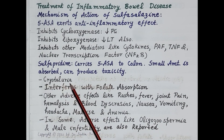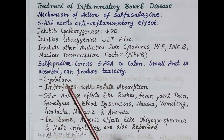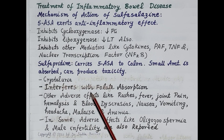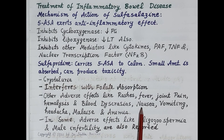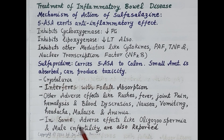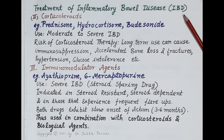Metabolites of sulfasalazine form crystals passed in the urine, so one side effect is crystalluria, which can cause kidney damage. Sulfasalazine also interferes with folate absorption, so folic acid supplementation should be given alongside this drug. Other side effects include rashes, fever, joint pain, hemolysis, blood dyscrasias, nausea, vomiting, headache, malaise, and anemia. In some patients, adverse effects like oligozoospermia and male infertility are also reported.